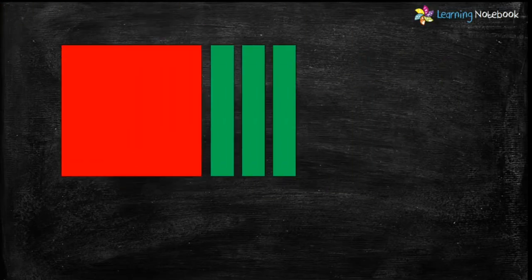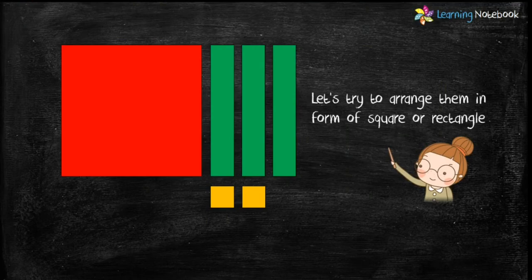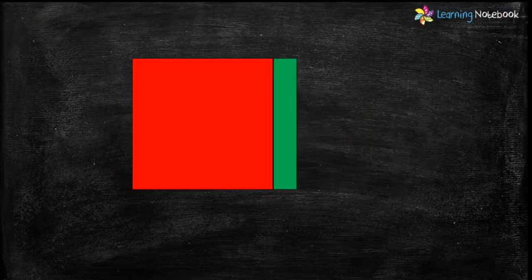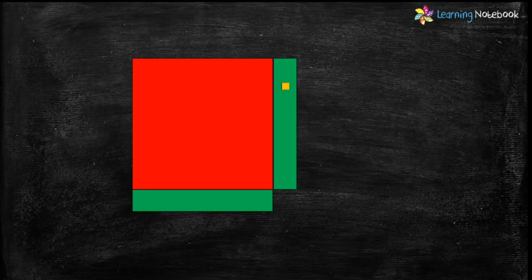Students, these are the shapes we have cut out. Now let's try to arrange them in the form of a square or a rectangle. First let's put the big red square and then arrange the green rectangle. Next let's put the second green rectangle below the red square. Now put the orange square to complete the corner.